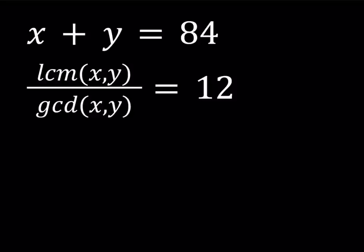Hello everyone. In this video we're going to be solving a system of equations. We have x plus y equals 84 and we have the ratio LCM to GCD, and that is equal to 12.